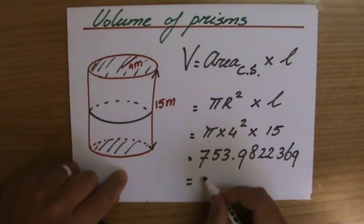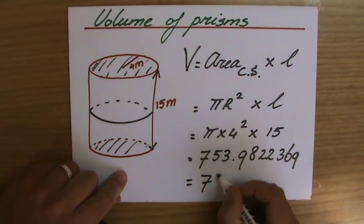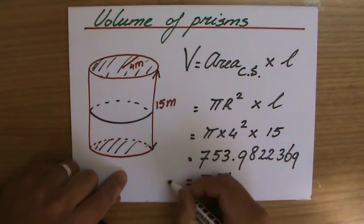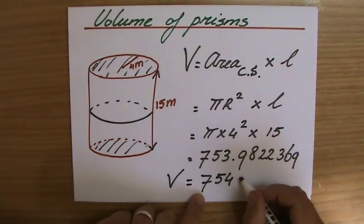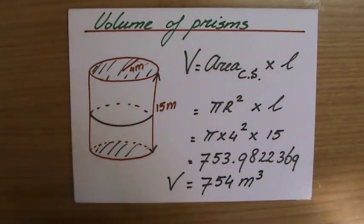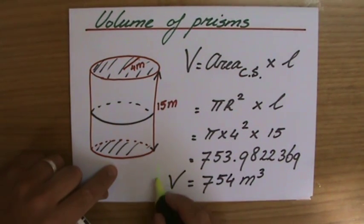So corrected to three significant figures, the volume is 754 m³. It's a big cylinder, by the way - perhaps it's filled with oil or something. It's quite a large cylinder.